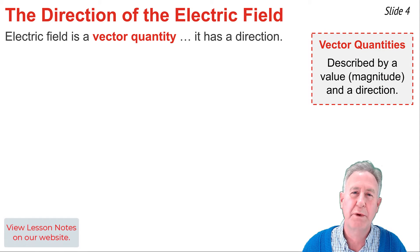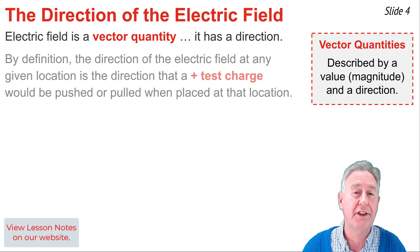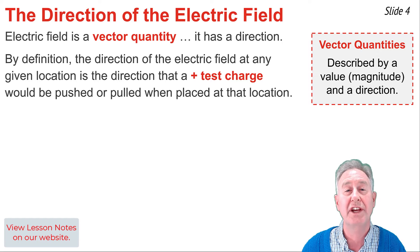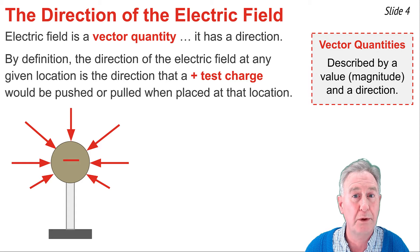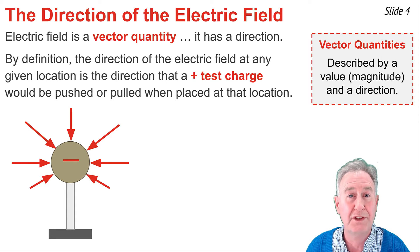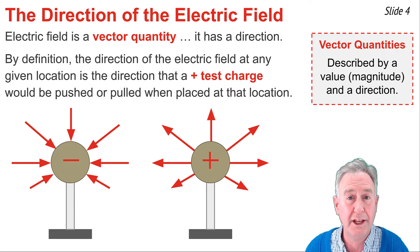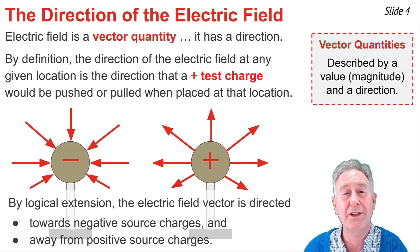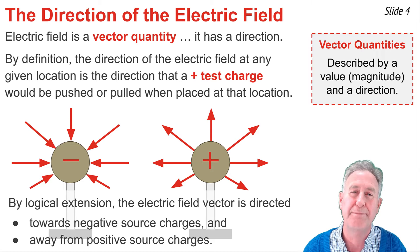Electric field is a vector quantity, meaning it has a magnitude and a direction. The direction of the electric field at any given location around a source charge is the direction that a positive test object would be pushed or pulled when placed at that location. Around a negative source charge, a positive test object would be pulled towards it, so the electric field is directed towards it. Around a positive source charge, the field is directed away. In general, the electric field is always directed towards negative source charges or away from positive source charges.